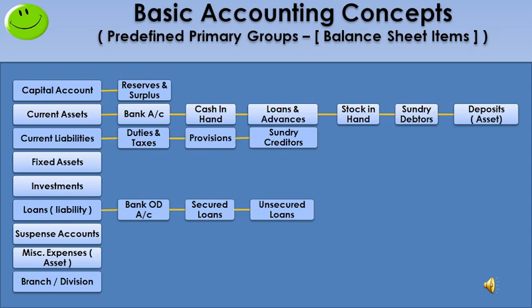Next, current liability — company's debts or obligations which are to be paid within a short period. Its subgroups are: first, duties and taxes — statutory dues or taxes to be paid. Next, provision — the business owner periodically reviews income and expenses. For example, electricity or telephone bills must be paid each month, but the exact amount isn't known until the next month. So the charges are accounted based on the prior month as a provision entry, then reversed once the actual receipt is received.